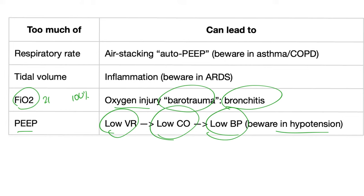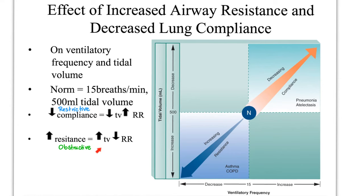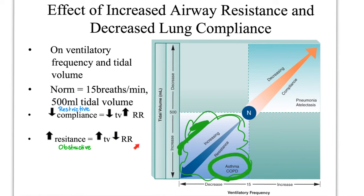In emphysema, tidal volume is high but respiratory rate is low — it takes a long time to expire. Obstructive lung disease raises compliance. In restrictive lung disease, compliance is low and tidal volume is low — as seen in patients who had a lung removed or who have fibrosis, pneumoconiosis, or asbestosis — but respiratory rate increases as a compensation. Thank you so much for watching, and good luck.